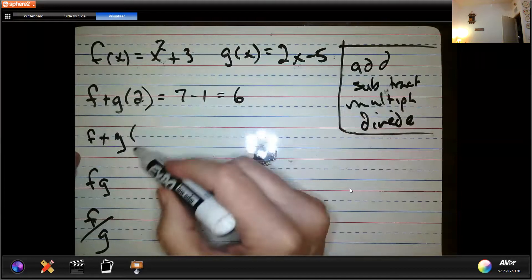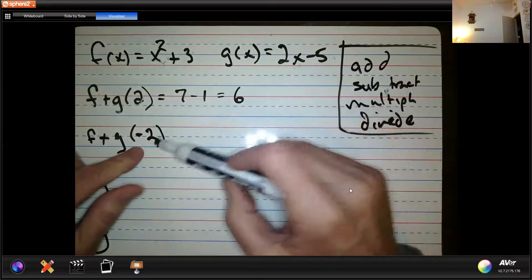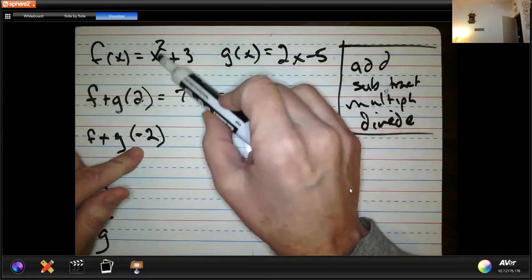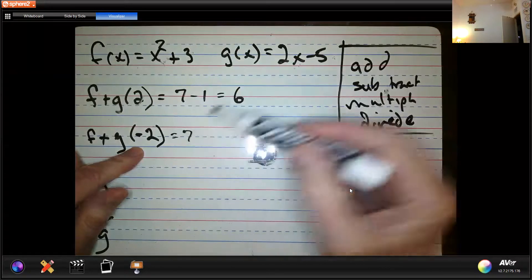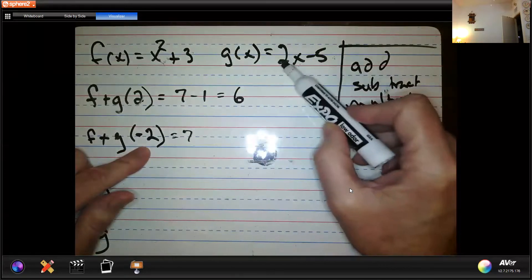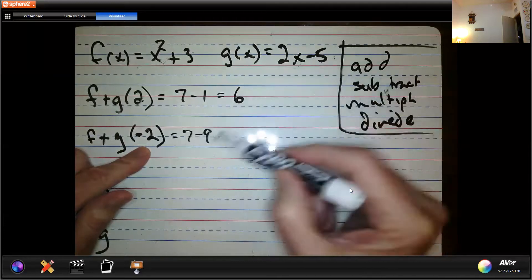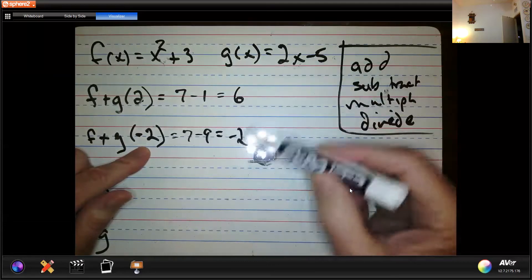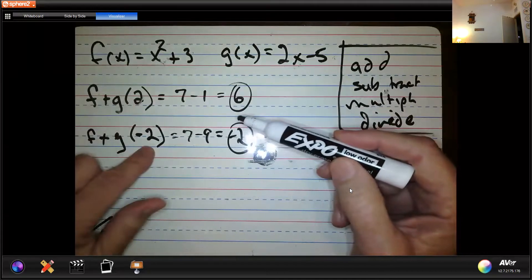Let's do f plus g of negative 2, just to see if we can get it right here. Negative 2 goes in, that would be positive 4, plus 3, that's still 7. Negative 2 goes in here, that's negative 4, minus 5, that's minus 9. Hey, that's negative 2. See, these are the answers to that kind of problem, right?